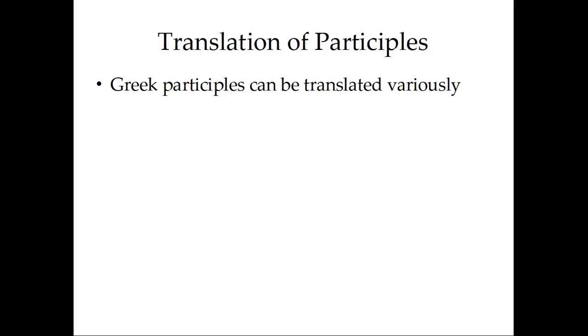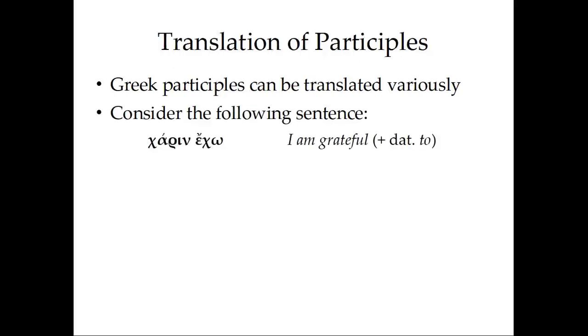Now, translation. Greek participles can be translated variously. In fact, they're a bit of a challenge, especially at first, because they can be translated in so many different ways. Consider the following sentence in Greek. First, let's learn an idiom that we're going to use in the readings. χάριν ἔχω. χάριν comes from the feminine noun χάρις, which you may have heard of. We get our word charisma from it. It means grace or favor. However, this particular idiom, χάριν ἔχω, literally to have or hold grace or favor, can mean I am grateful, and then with the dative to someone. So, we're going to need that in this next sentence.